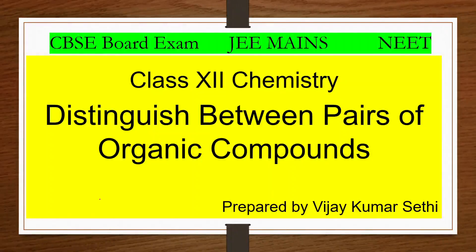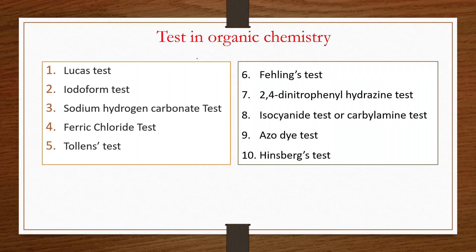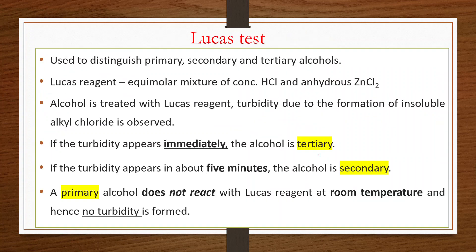In this video we will discuss how to distinguish between pairs of organic compounds. There are certain tests in organic chemistry which are given by specific compounds. These tests include: Lucas test, Iodoform test, sodium hydrogen carbonate test, ferric chloride test, Tollens test, Fehling's test, 2,4-dinitrophenylhydrazine test, isocyanide (carbylamine) test, azo dye test, and Hinsberg test.